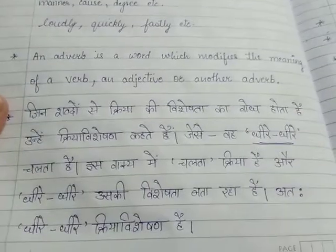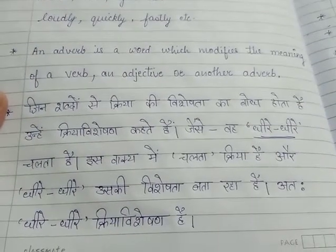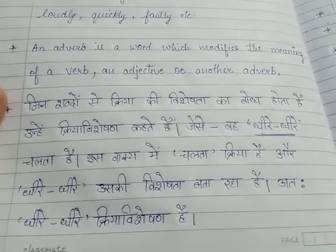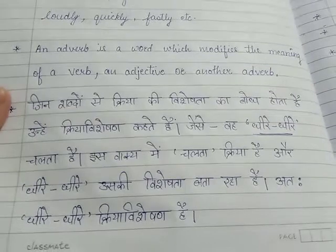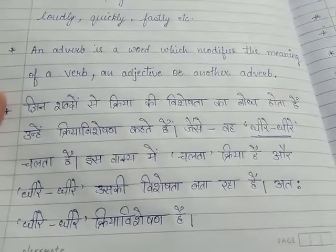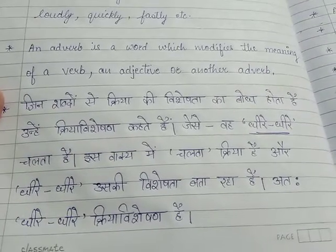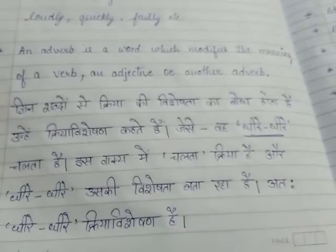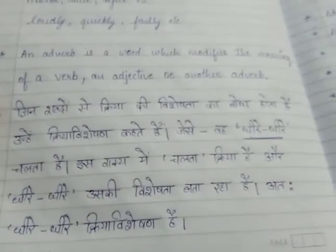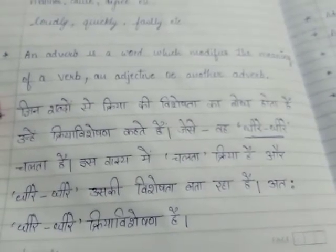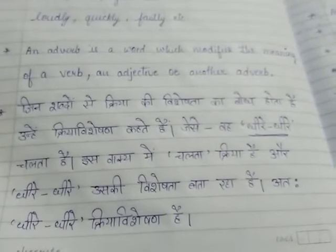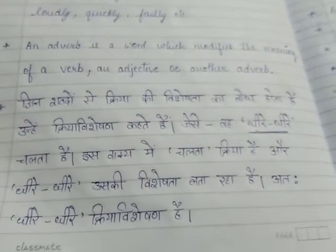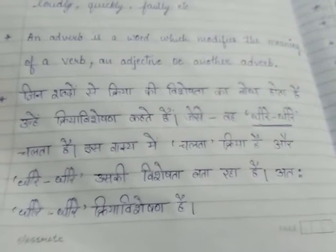जिन शब्दों से क्रिया की विशेषता का बोध होता है, उन्हें क्रिया विशेषण कहते हैं. जैसे — वह धीरे-धीरे चलता है. इस वाक्य में 'चलता' क्रिया है और 'धीरे-धीरे' उसकी विशेषता बता रहा है, इसलिए धीरे-धीरे क्रिया विशेषण है.